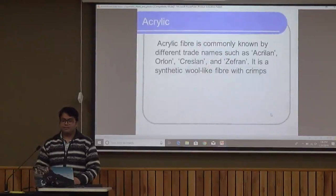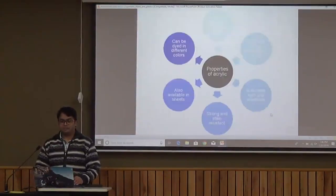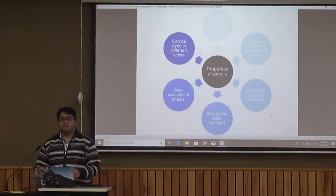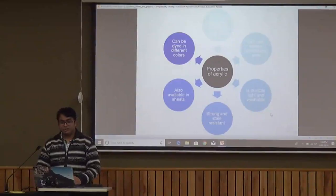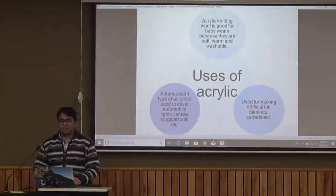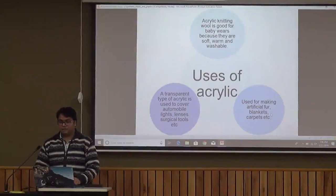Acrylic is a very common fiber which has a wool-like appearance and is thus called synthetic wool. It is resistant to moths, so it is used as a wool substitute and has a long life. It is soft with crimps and resembles wool. It is durable, light, and washable. It is strong and stain resistant. It is available in sheets and can be dyed in different colors. It is used to make baby wear, artificial fur, blankets, and automobile upholstery, etc.